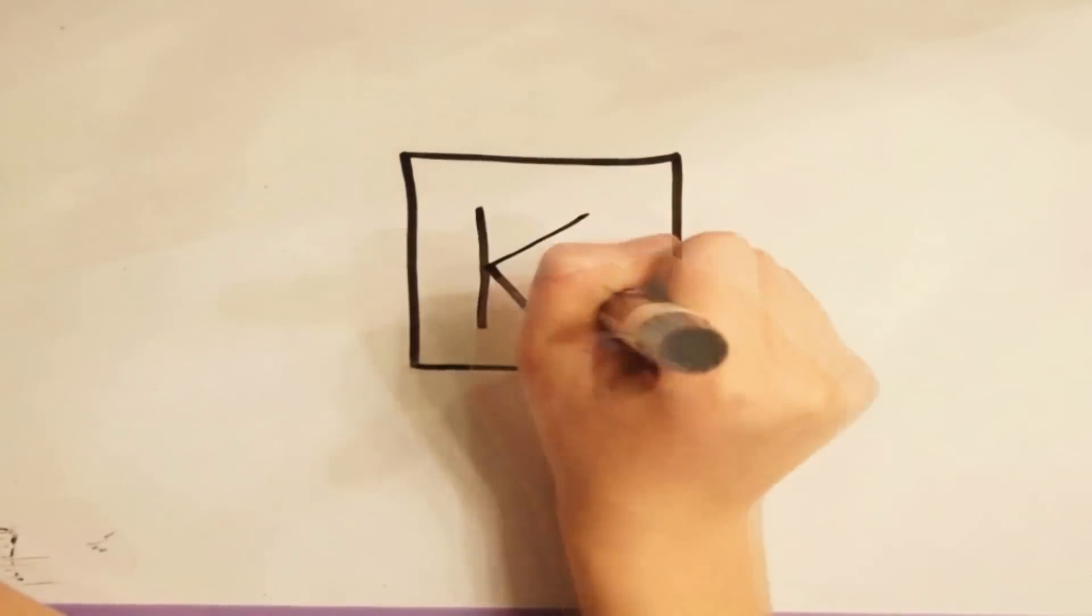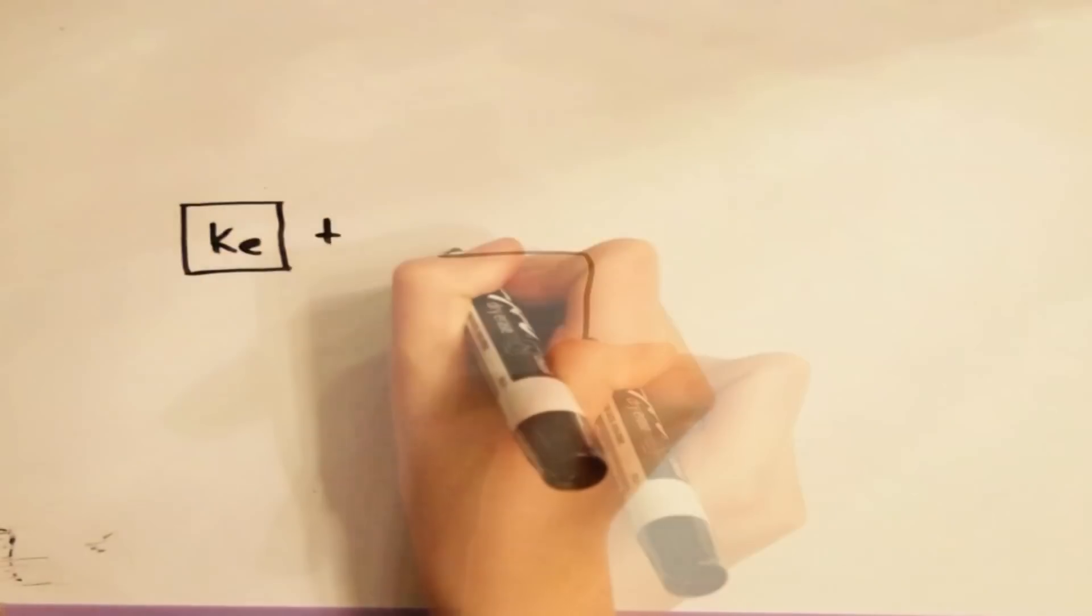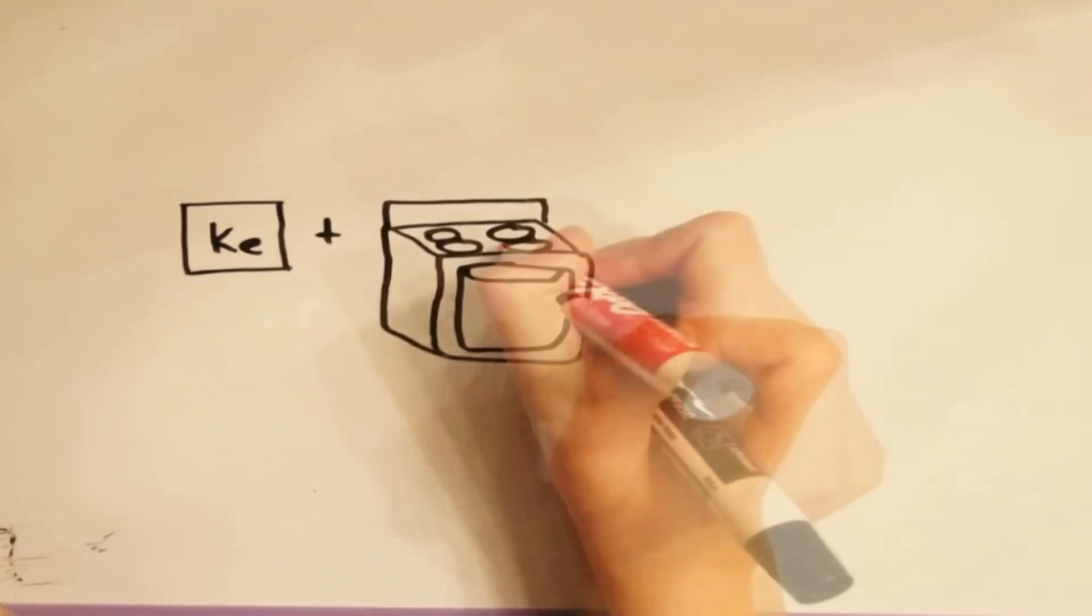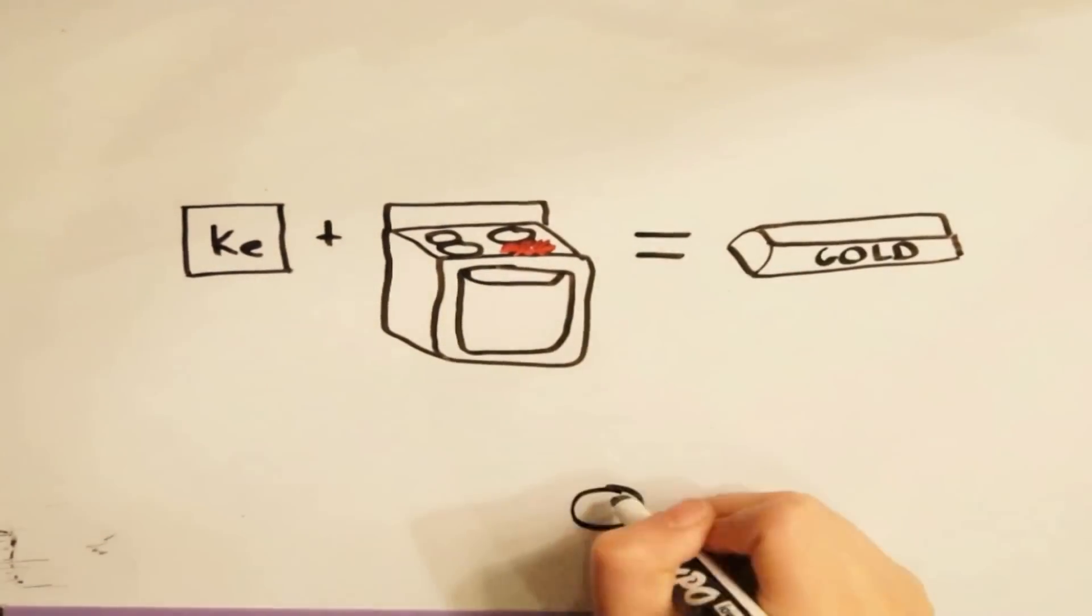At age 13, Kelly successfully changed the atomic structure of lead when creating gold. For this achievement, Kelly received a pat on the back and a nice Au.